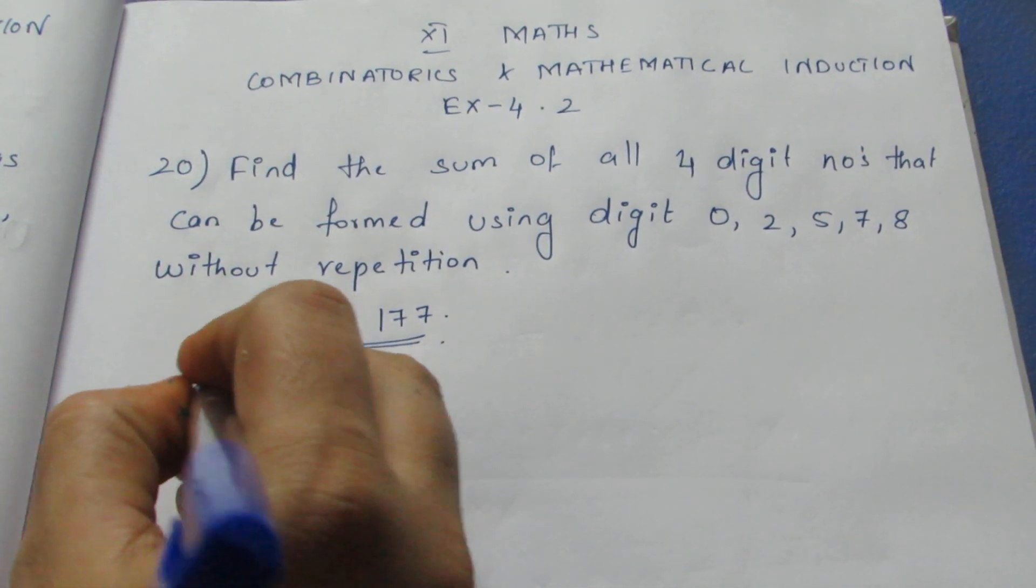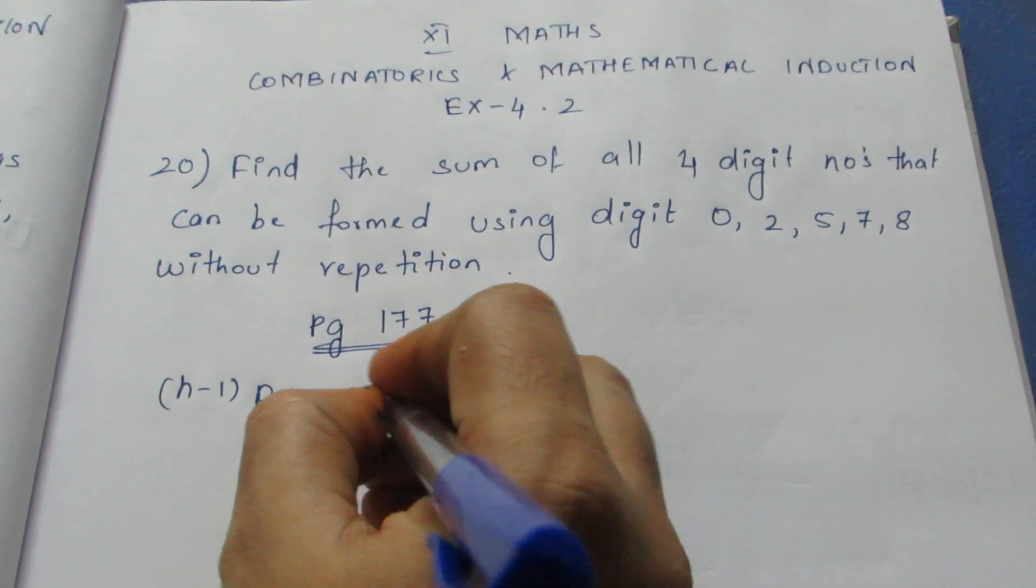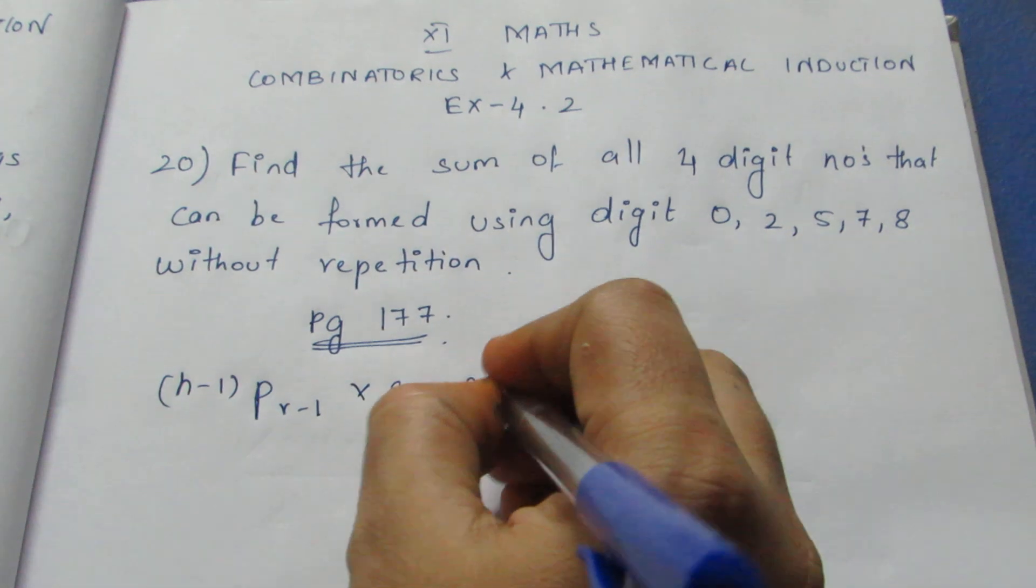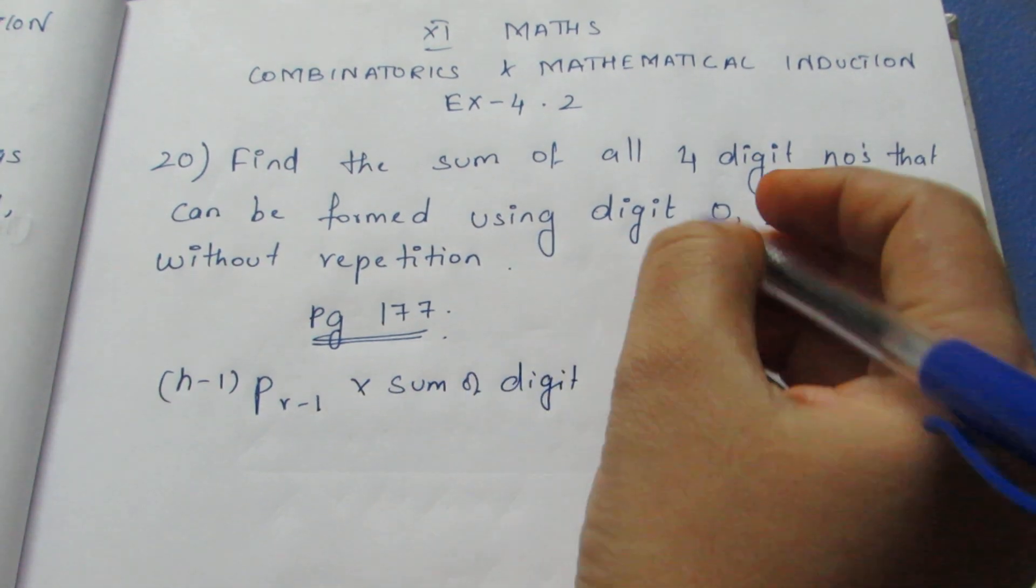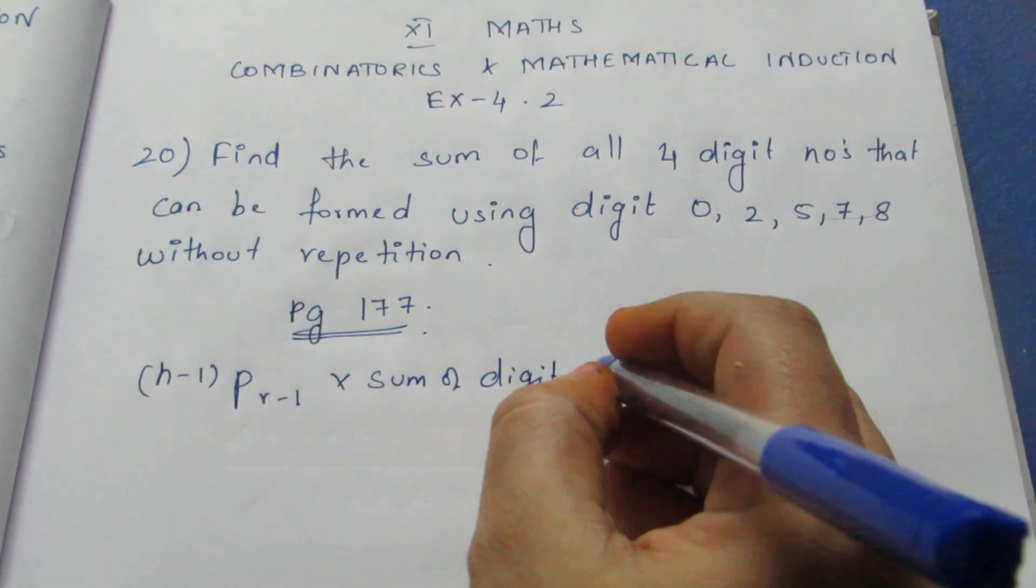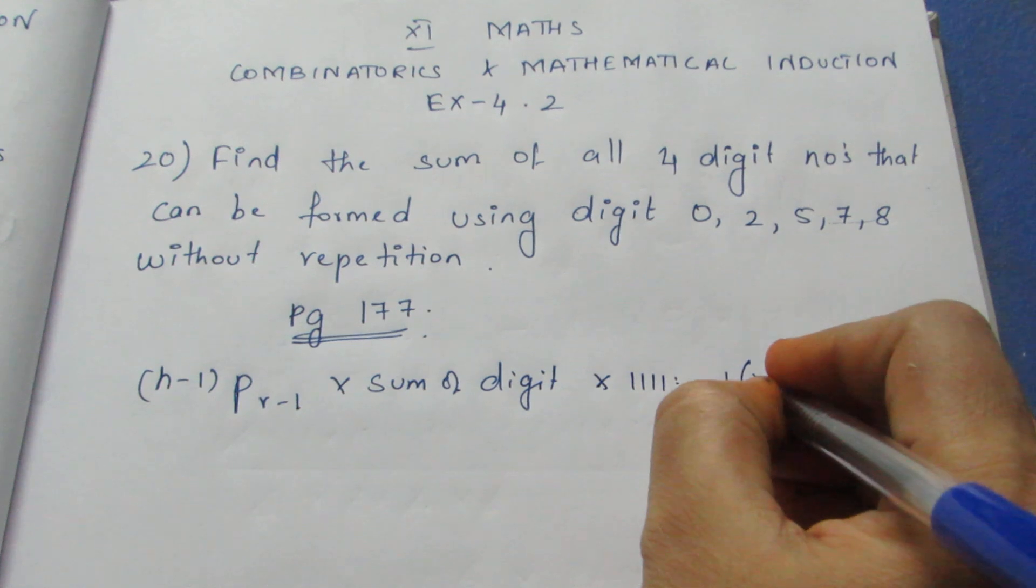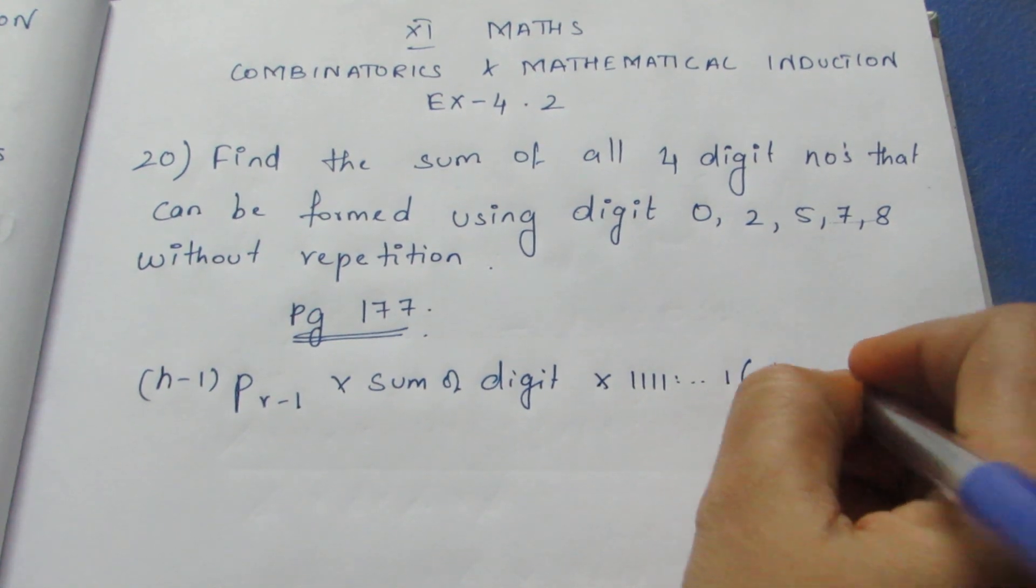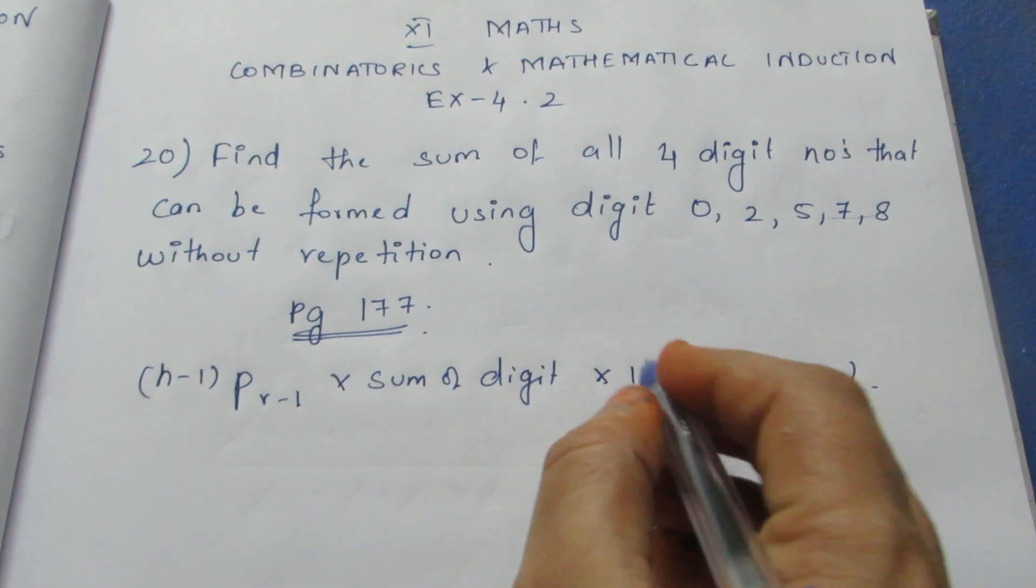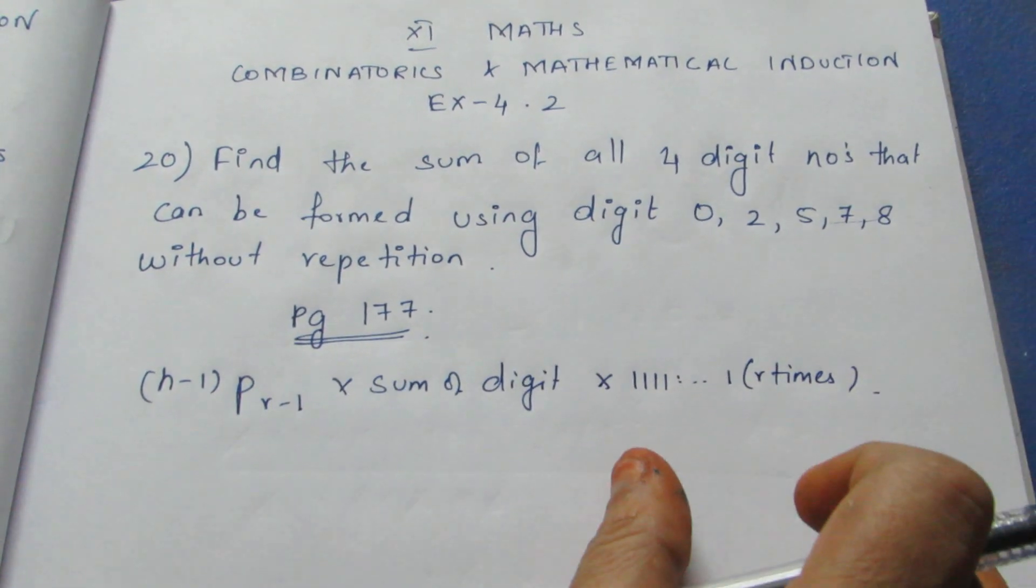If 0 is included, the formula is (n-1) into Pr-1 into sum of the digits. The sum of the digits means you add all the given digits. Whatever the numbers are, sum of the digits into 1111... repeated r times. r times means if r is 4, you use 4 ones; if r is 3, you use 3 ones.